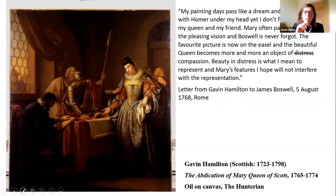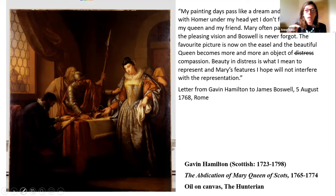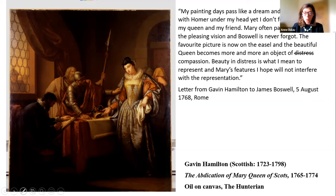Through their correspondence during the gestation of the painting, we have an insight into their intentions. Hamilton refers to Homer, which is under his pillow as he sleeps — an interesting notice of what he was truly interested in and how he wanted to represent the Queen. He wanted her to be beautiful, and he wanted her to be an object of compassion. Written in the year of the 200th anniversary of Mary's abdication, the letter strongly suggests that both artist and patron intended to contribute through this painting to the debate around the true nature of Mary. They made sure it was shown at the Royal Academy annual exhibition as soon as it reached London in 1776.